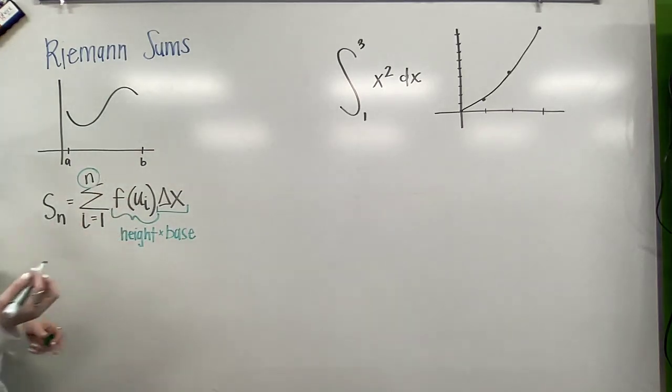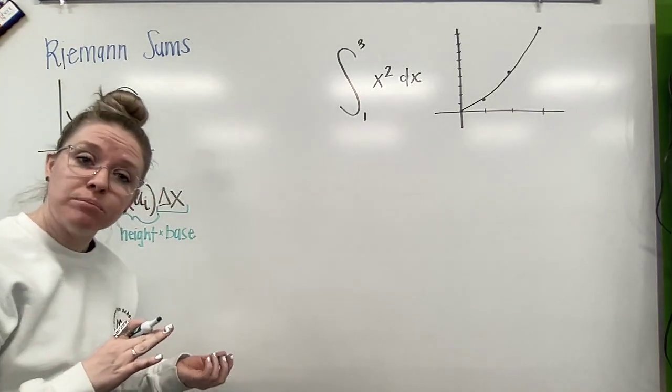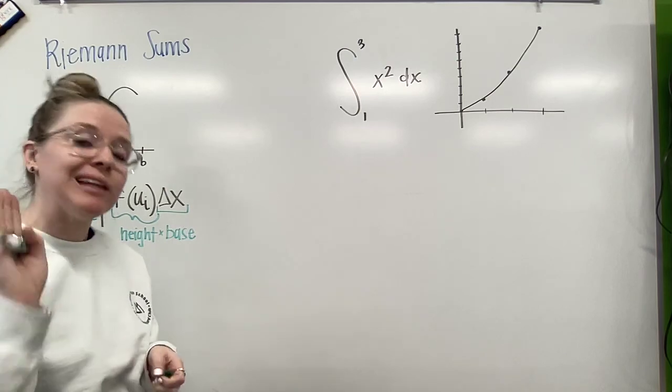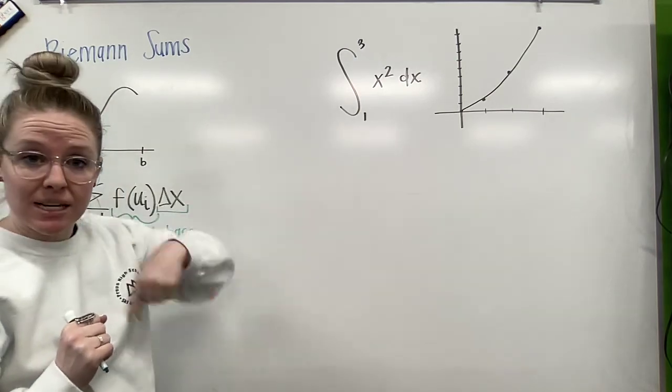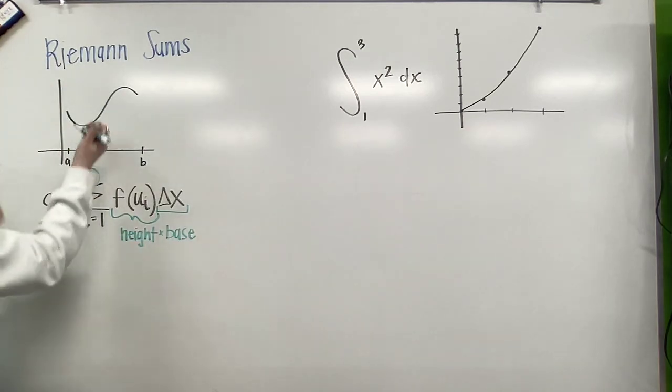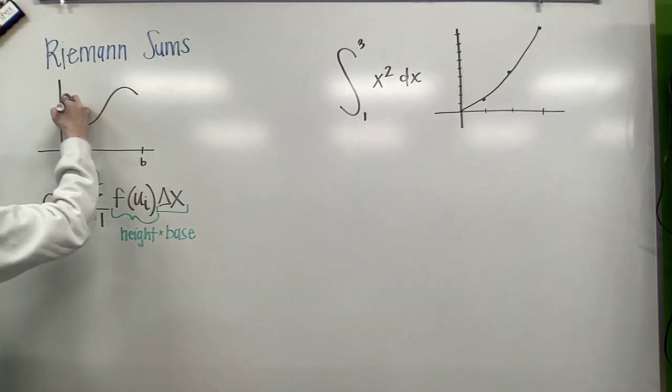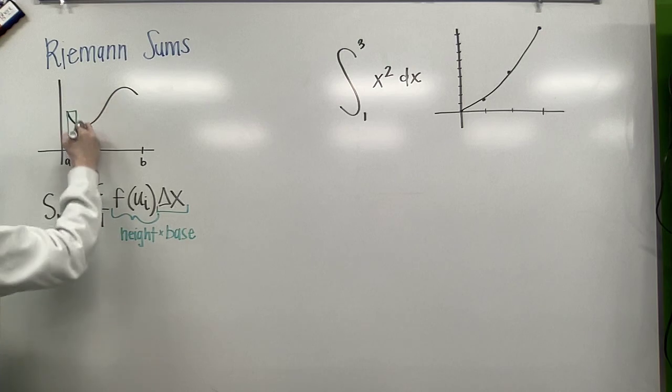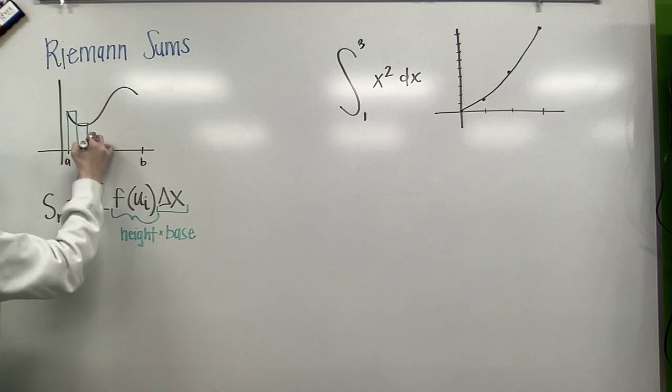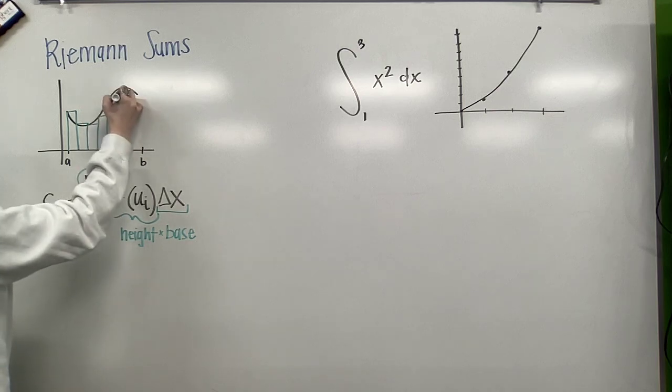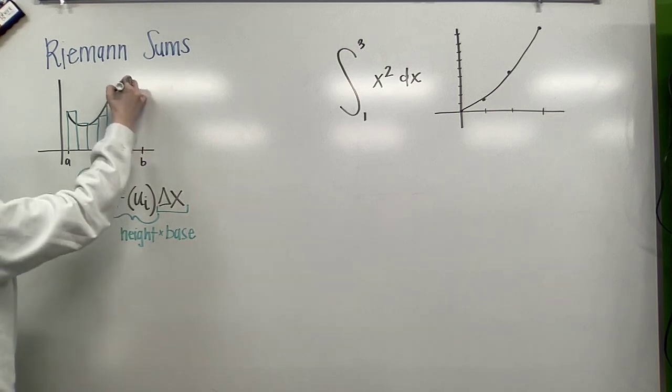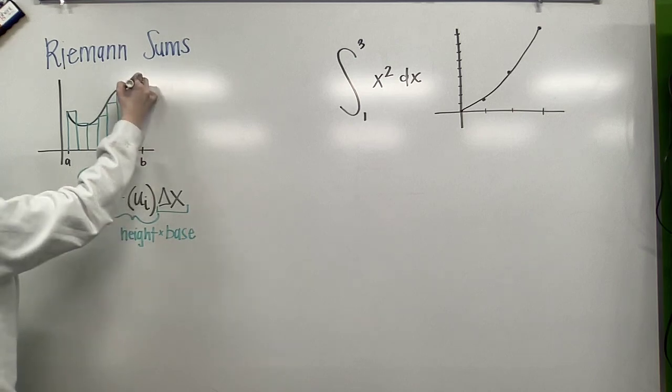So instead of saying upper and lower sums, we're now going to just change it to a left-sided sum or a right-sided sum. And we'll work through that with this example over here. But for this visual, I'm going to go ahead and go with a left-sided sum. And if we notice, some of our rectangles are going above and some of our rectangles are going below.